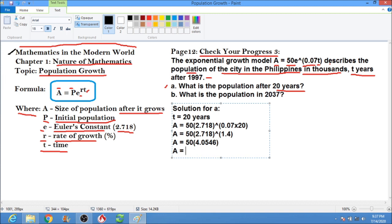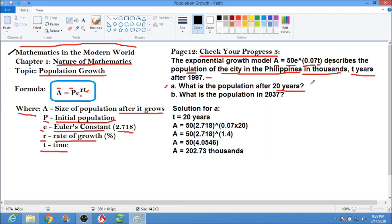And that will be A equals times 50. 50 times 4.0546, and that will be 202.73. So this is in thousands. Since the question describes the population of the city in the Philippines in thousands, it's 202.73 thousand in 20 years.